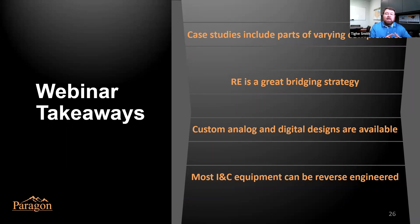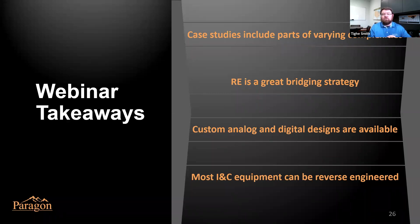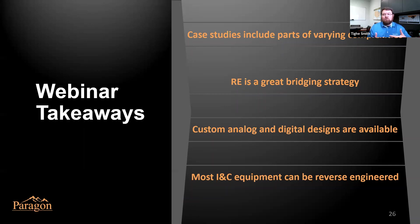Paragon is capable of doing both custom analog and custom digital designs. If you've got a project and don't have an off-the-shelf solution but think it's going to benefit your station, come talk to us — we've got great capabilities in designing systems, we can qualify sensors, and help walk through qualification requirements. In the case of the remote monitoring example, we qualified that device to meet UL requirements for fire protection systems — something our team was not familiar with, but we educated ourselves and came up to speed fast. And my final point is that most I&C equipment can be reverse engineered, so it's really a trade off between expense and benefit to decide what you want to do with your equipment going forward.